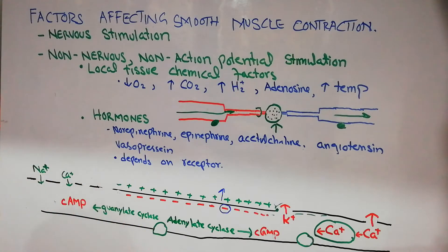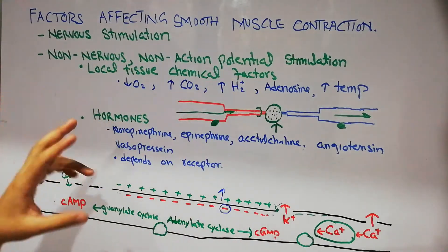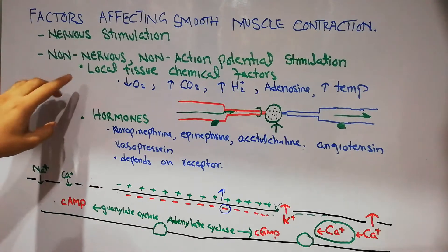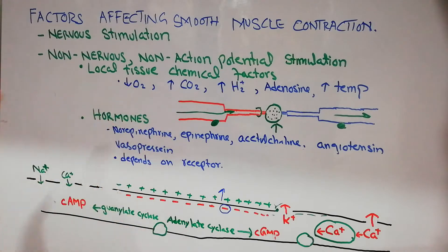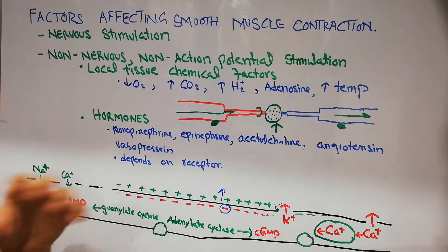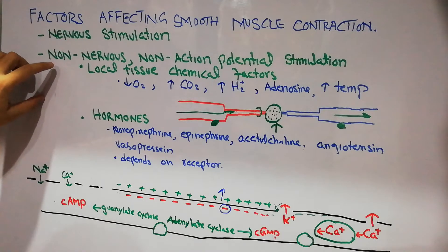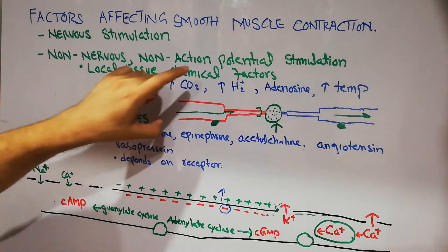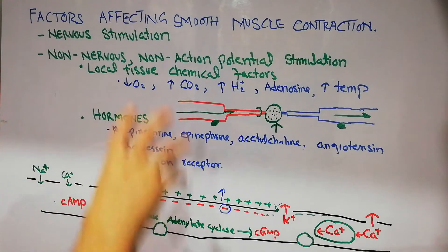Smooth muscles could be directly excited by the nervous system with the help of neurons bringing messages from the brain or spinal cord via nerve fibers. Apart from the nervous system, we have non-nervous, non-action potential stimulation as well, and these are of two types: local tissue chemical factors and hormones. Both can cause contraction or excitation, or similarly inhibition, of the smooth muscles.